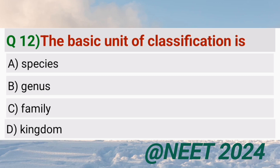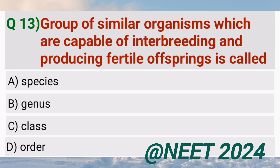The basic unit of classification is species. A group of similar organisms which are capable of interbreeding and producing fertile offspring is called species.